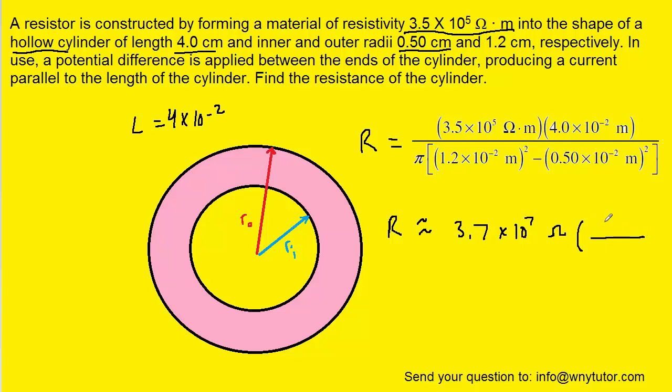because it's such a large value, we could recall that 1 mega ohm is 10 to the positive 6 ohms. So if we perform that conversion, we would get 37 mega ohms. So that would be the correct answer.